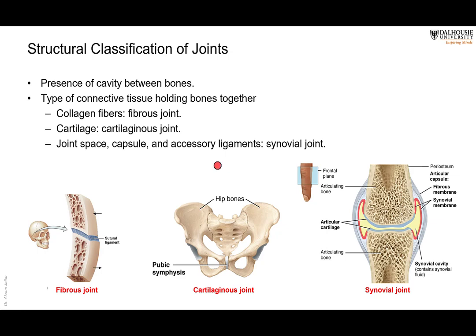Sometimes we have collagen fibers between the articulating structures — for example, between the flat bones of the skull, where there are very short, thick collagen fibers. So you would expect this joint to be an immovable joint; there is no movement taking place between the bones of the skull. But it is still a joint. A joint is a union, an articulation, not necessarily movable.